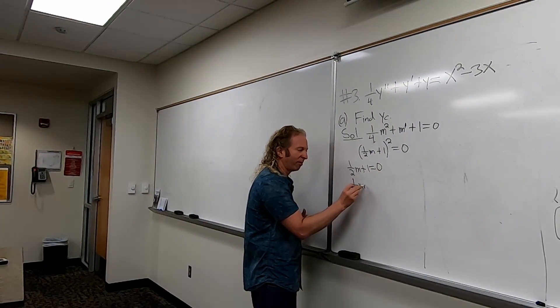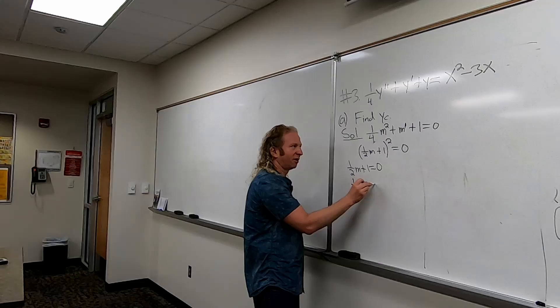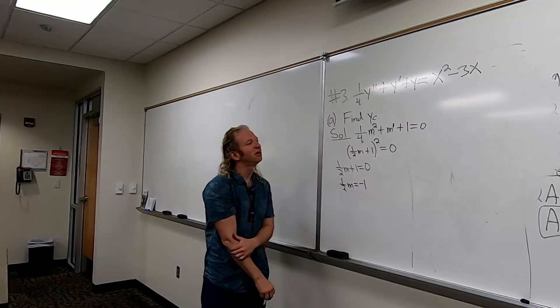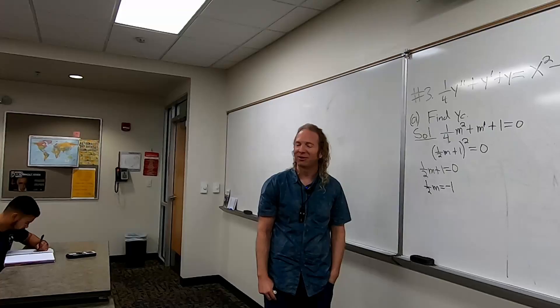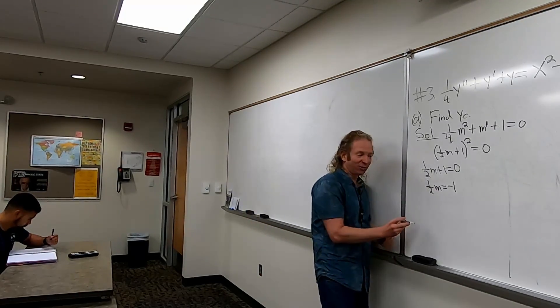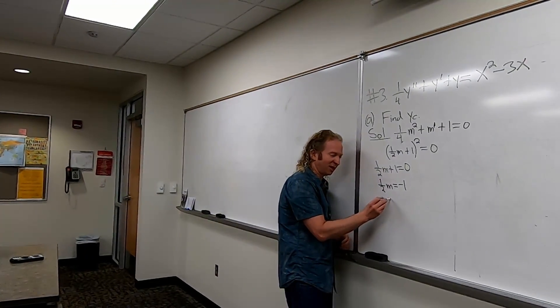What an uncomfortable problem. You know what we could have done to make this easier? Multiply by four. Why didn't we do that? Yeah, I don't know. Multiply by two. It was too late. Missed opportunities. M equals negative two.